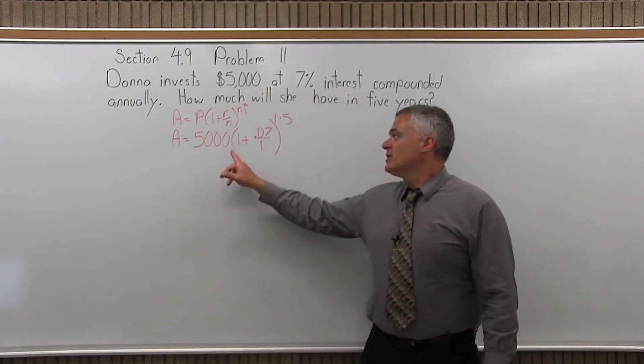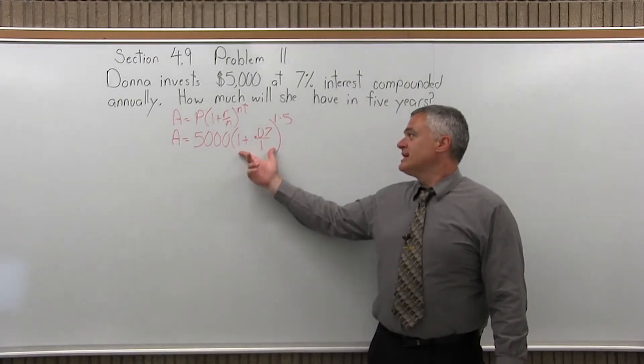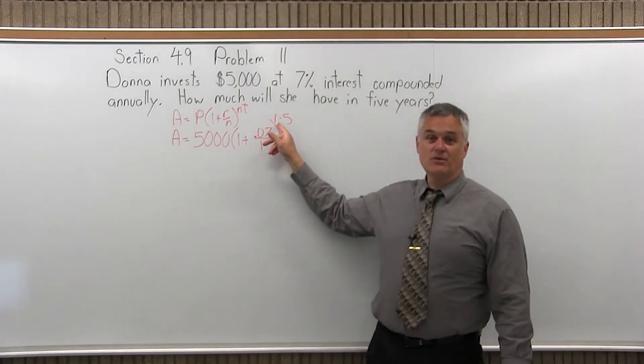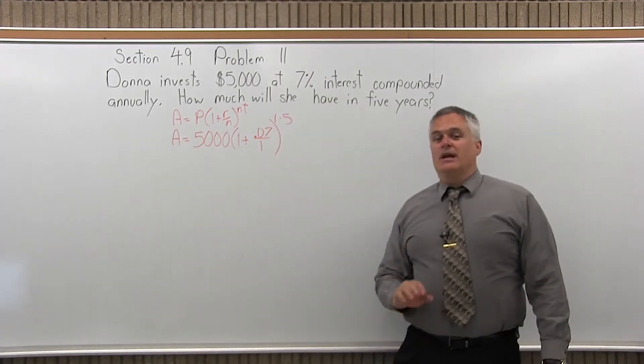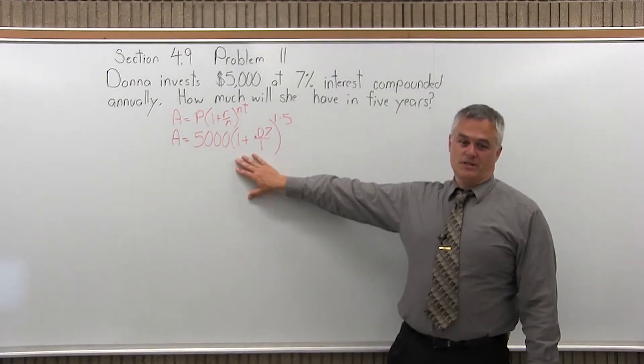So now you have multiple operations going on. There's a multiply, 5,000 times the parentheses. You have parentheses. Inside the parentheses, you have an add, you have a divide, you have an exponent with a multiply. Any type of math, if you have parentheses, you must do the parentheses first.